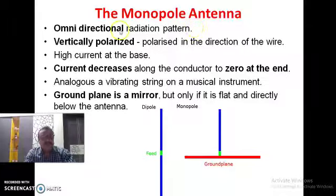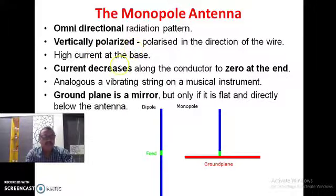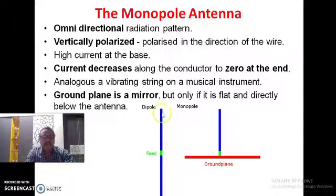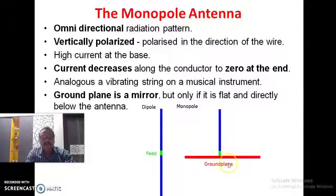Monopole antennas have some characteristics like an omnidirectional radiation pattern, which is very popularly used, and they use vertical polarization. If you see a dipole antenna, ideally it is half a wavelength — this much is the quarter wavelength and the remaining portion is also a quarter wavelength. Current is maximum at the center and minimum towards the edges. In a monopole antenna, the bottom portion is removed and only the upper portion is used, with the ground acting as a perfect mirror.